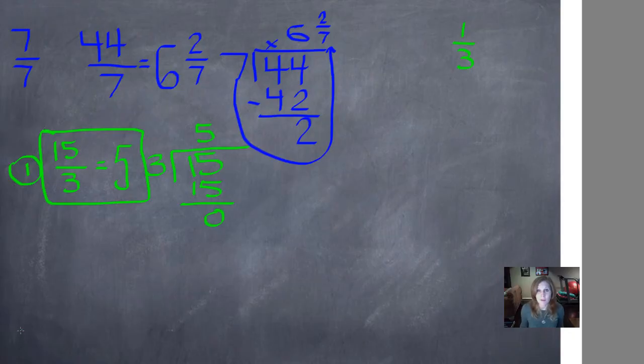There you go. There are five wholes hidden in 15 thirds. Let's try another one. We're going to use the red pen this time so it stands out.